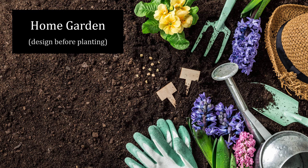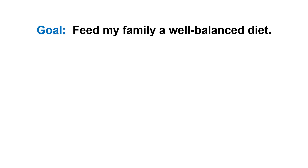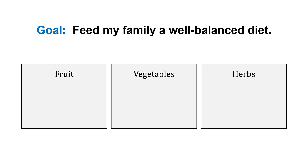Let's look at an example. Let's imagine we have a home garden — not a database, but we'll use this to illustrate the idea of modeling. We want to design our home garden before we start planting to hopefully achieve our goals. Starting conceptually, my goal might be to feed my family a well-balanced diet with this garden. Then I slowly start drilling down — maybe I want space in my garden for fruit, vegetables, and herbs.